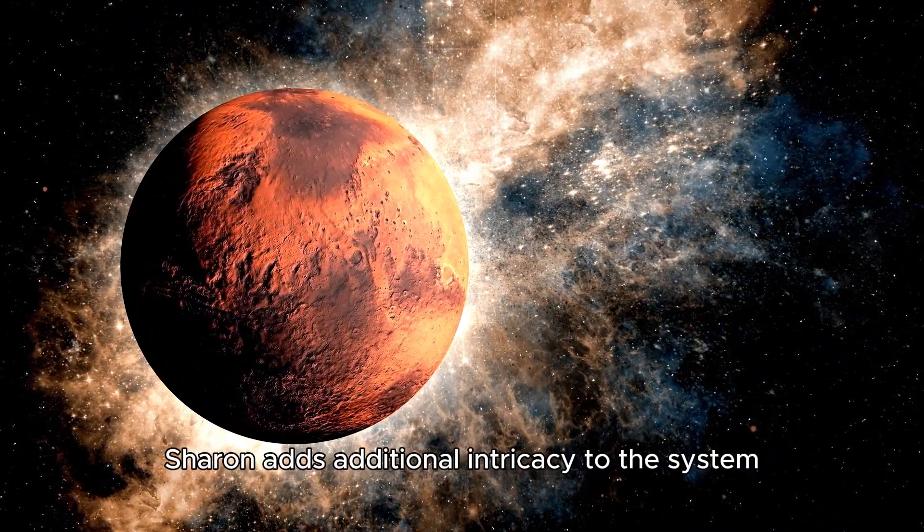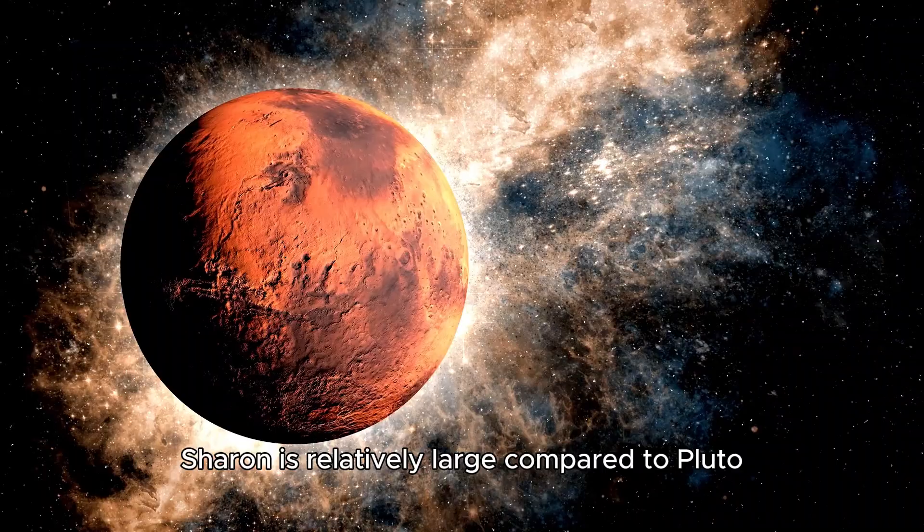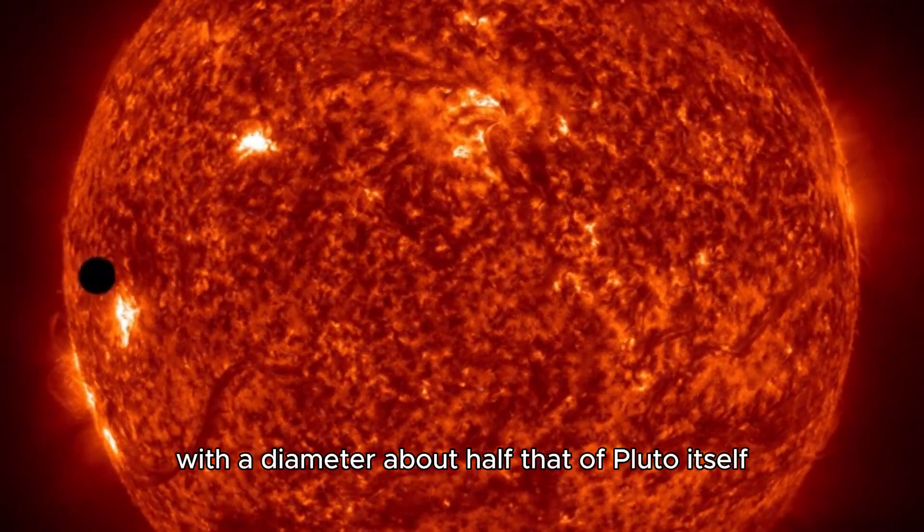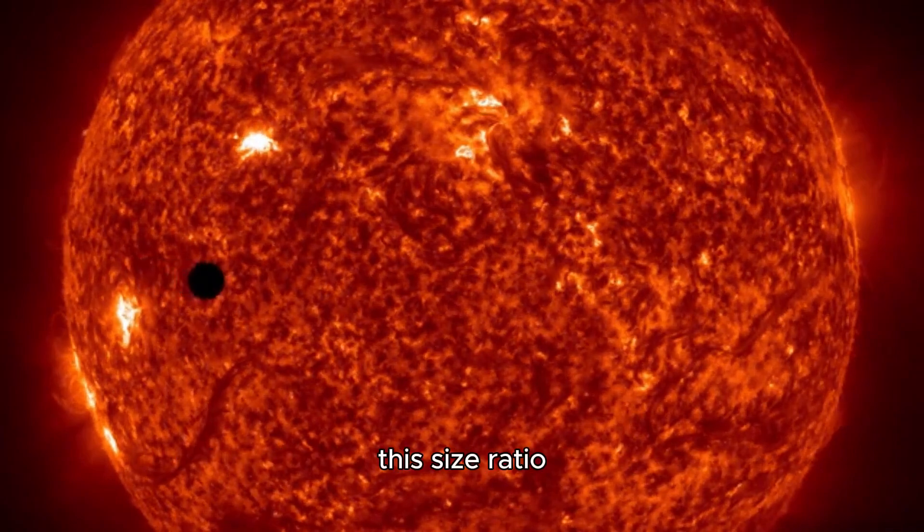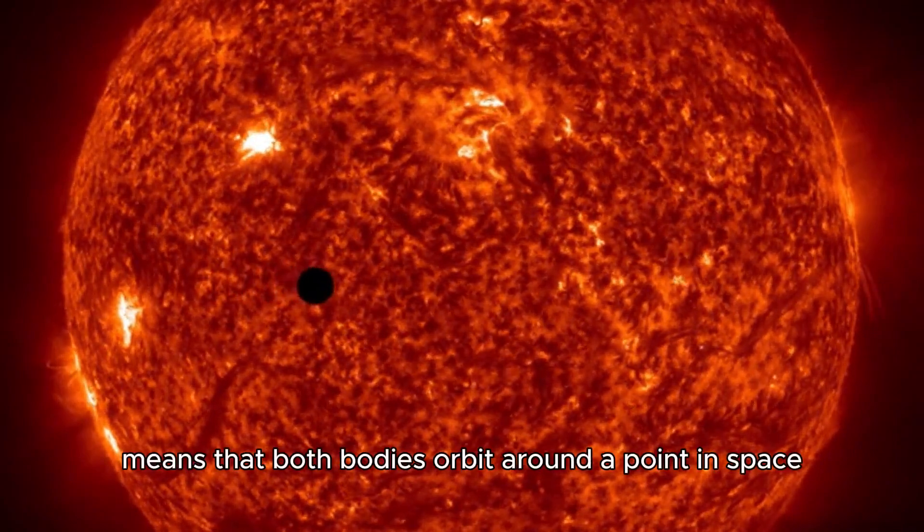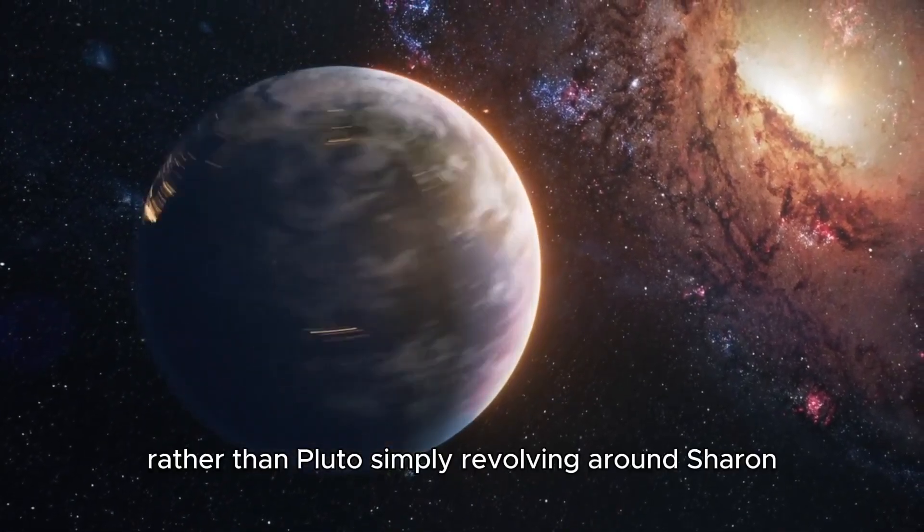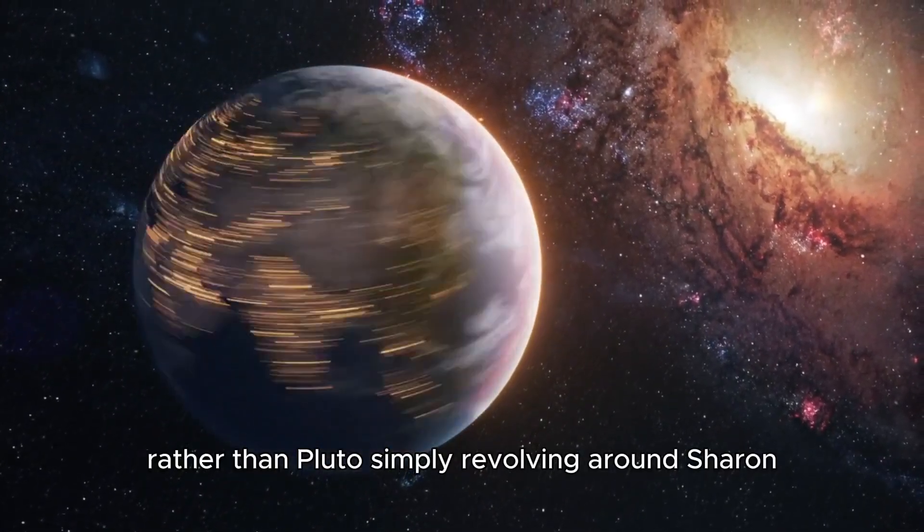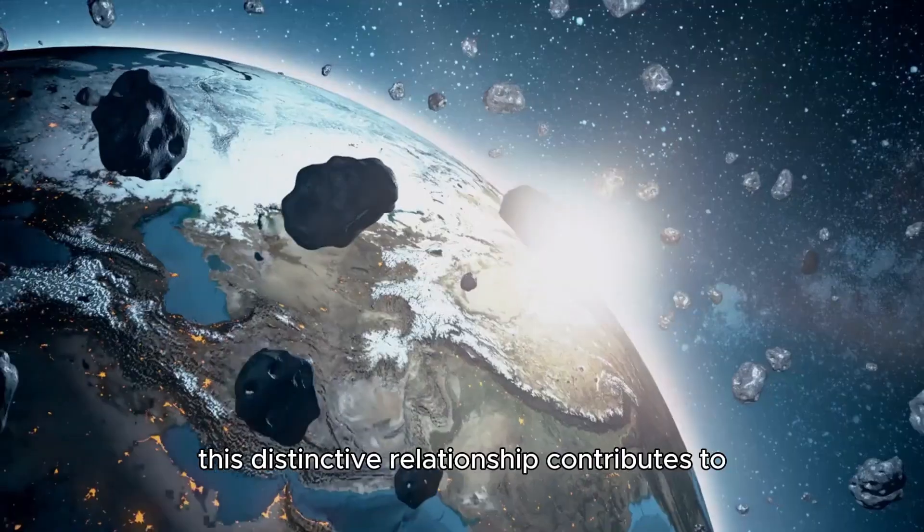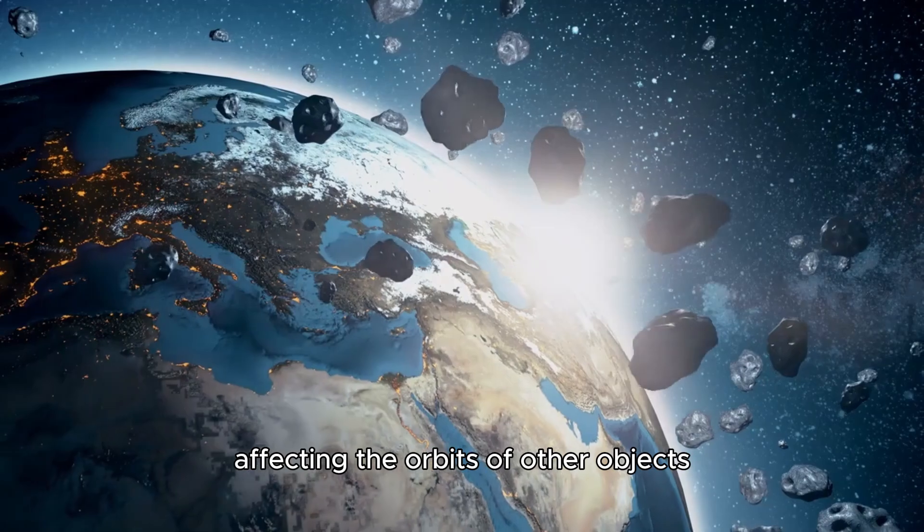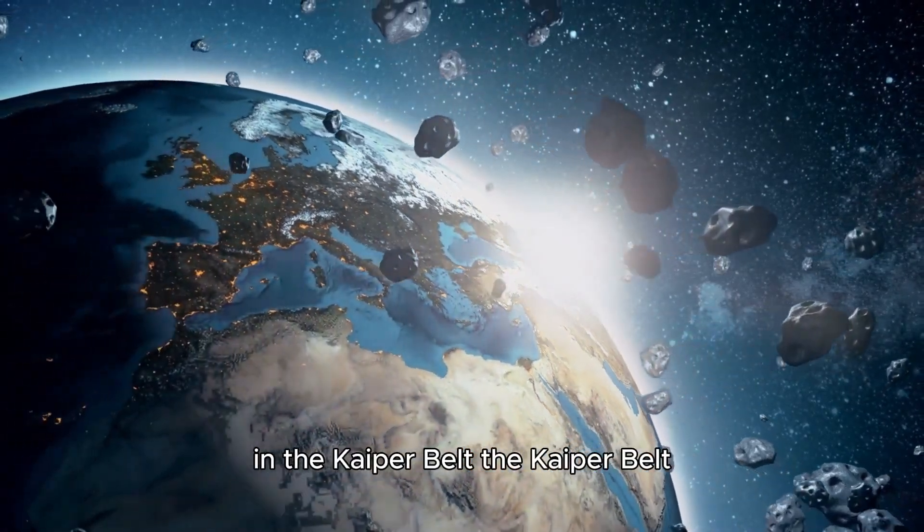The interaction between Pluto and its largest moon, Charon, adds additional intricacy to the system. Charon is relatively large compared to Pluto, with a diameter about half that of Pluto itself. This size ratio means that both bodies orbit around a point in space that lies between them, rather than Pluto simply revolving around Charon. This distinctive relationship contributes to the intricate gravitational dynamics in the region, affecting the orbits of other objects in the Kuiper Belt.